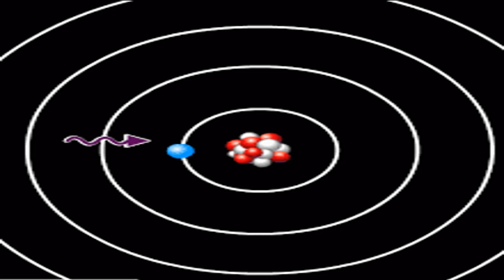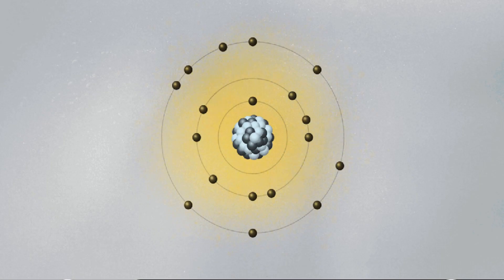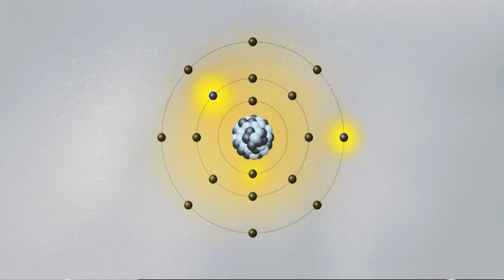The electron gives off the same amount of energy in the same form and with the same frequency and drops back to its initial position. This is why the emission and absorption lines of an element are the same.